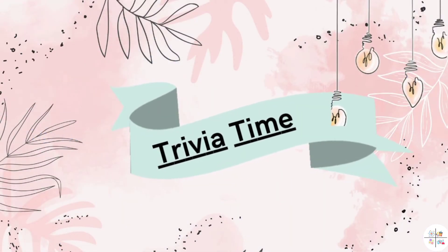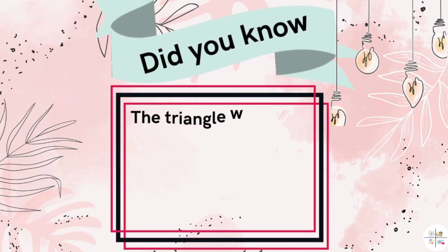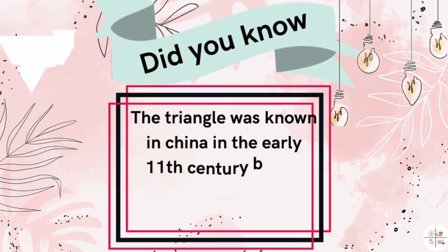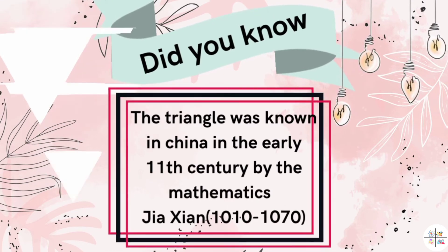It's trivia time! Did you know, the triangle was known in China in the early 11th century by the mathematician Jia Xian.